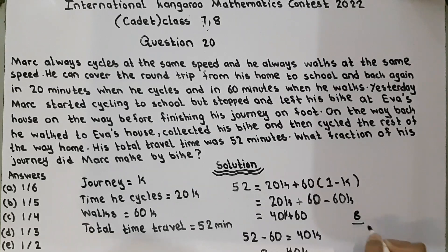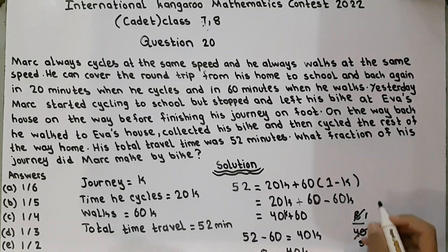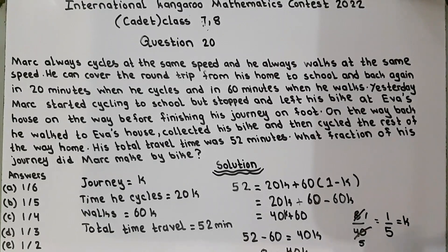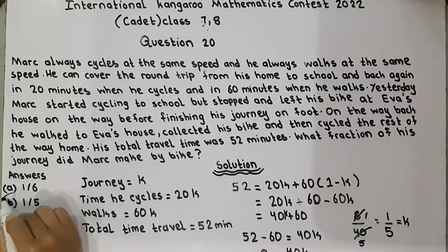8 divided by 40 is equal to 1 divided by 5, which equals K. This is the answer — Mark made one-fifth (1/5) of his journey by bike. And the answer option number is B.